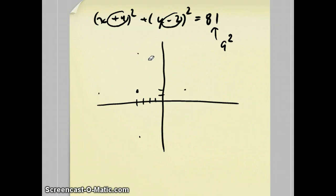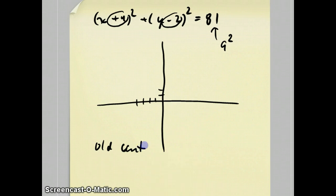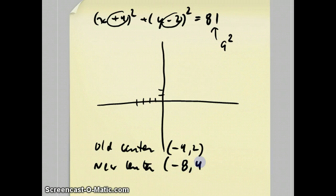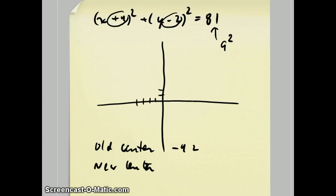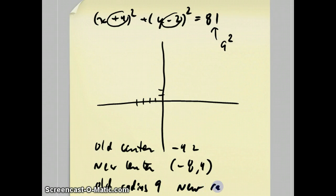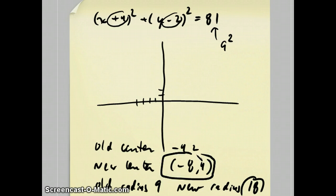But what they want to do is dilate all the points by a factor of two. That would move the old center — which was minus four, two — to a new center where the x and y coordinates both get multiplied by two. So there's our first answer. When everything gets doubled, the radius gets doubled also. So if the old radius was nine, the new radius is going to be 18. And that's all they wanted — they didn't want the new equation. That does it for question number 31.